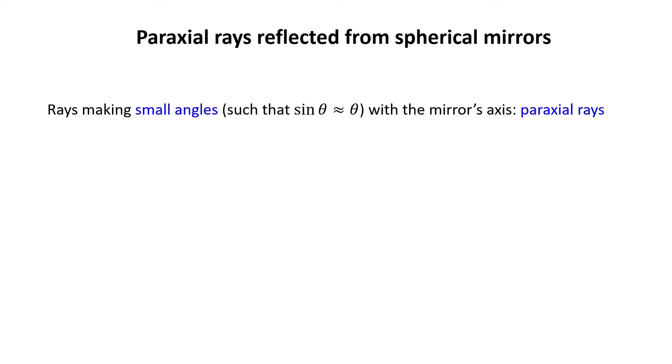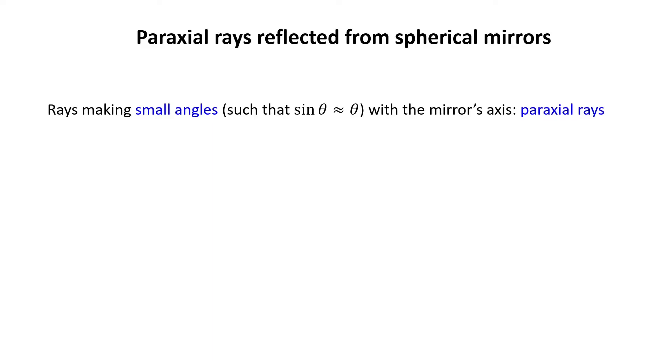Here, theta is the angle of the ray with respect to the axis. In the paraxial approximation, a spherical mirror has a focusing property like that of the paraboloidal mirror and imaging property like that of the elliptical mirror, as we will see later.